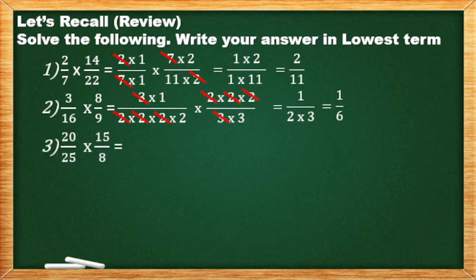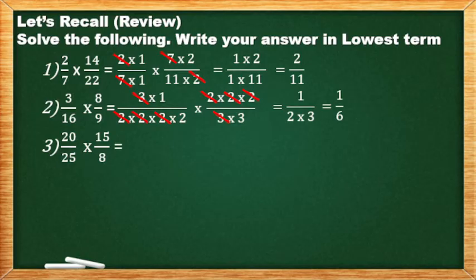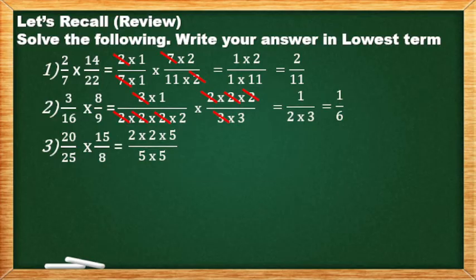Number 3: 20/25 times 15/8. Prime factor of 20 — kung naisip nyo yung 4×5, i-expand pa yung 4 kasi yung 4 may prime factor, which is 2×2. So nakuha ko ay 2×2×5 all over 5×5. Times, the prime factor of 15 is 3×5. And the prime factor of 8 — multiply lang natin ng tatlong beses ang 2.